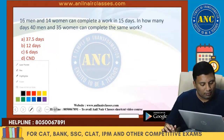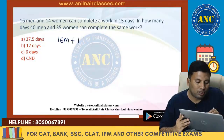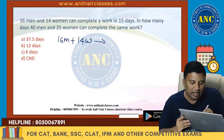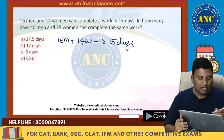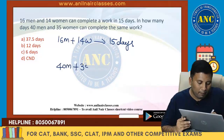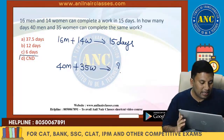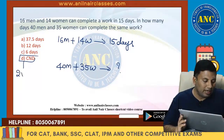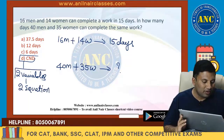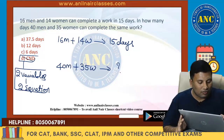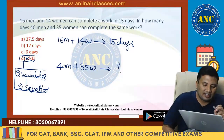First question. Most students will probably just go ahead and solve the problem directly. 16 men and 14 women can complete a work in 15 days. 40 men plus 35 women — they can complete the work in how many days? Some students say 'cannot be determined' because of two variables, but that's not necessarily true. And another mistake is treating this without checking proportionality.